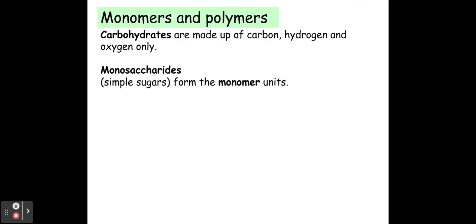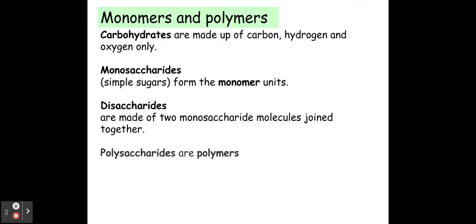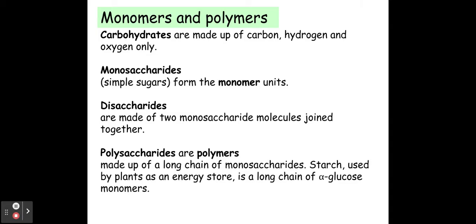So a monomer in this particular case because we're looking at carbohydrates are called monosaccharides. So a monosaccharide is one unit of sugar, one unit carbohydrate. Di stands for two so here we've got a disaccharide which is made of two monosaccharides joined together, and a polysaccharide is a polymer so this is where I've got more than two joined together such as starch.